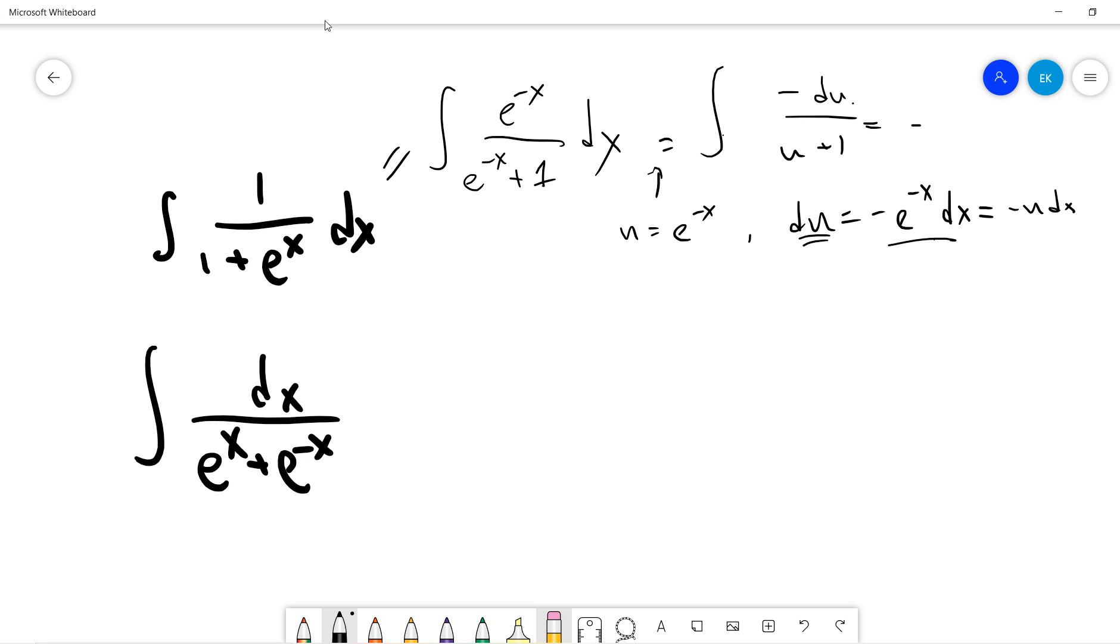So the answer is just negative log of u plus one plus C. So the answer is just this. Okay, so actually we don't need this. Very easy.